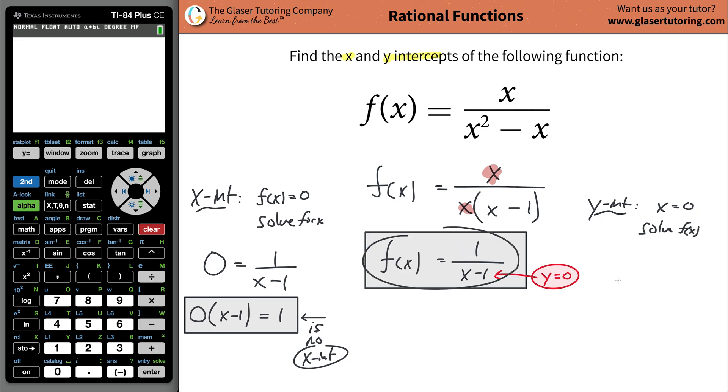So here's your function, write f of x equals now 1 over, anywhere you see x plug in a 0, minus 1. And f of x here is going to be equal to 1 over negative 1, which is basically saying that the y value, which is the f of x is equaling negative 1. This is now the y intercept. It's going to intercept the y axis at negative 1.